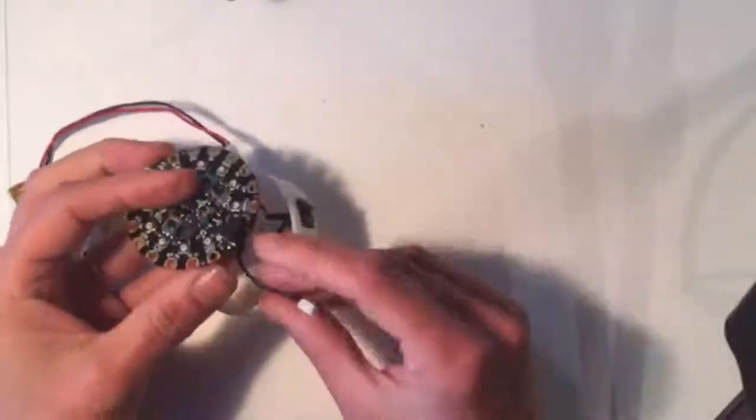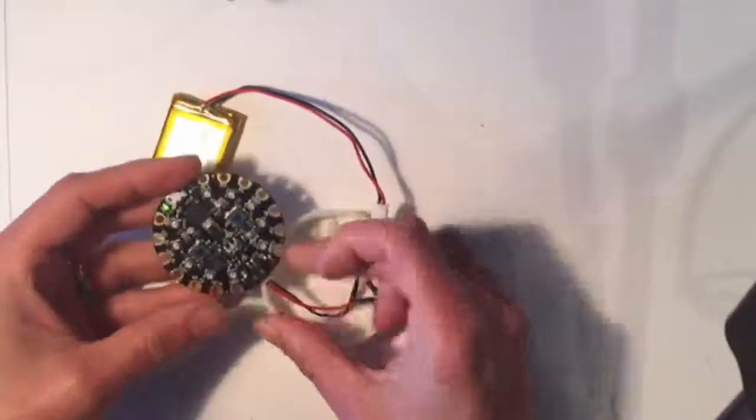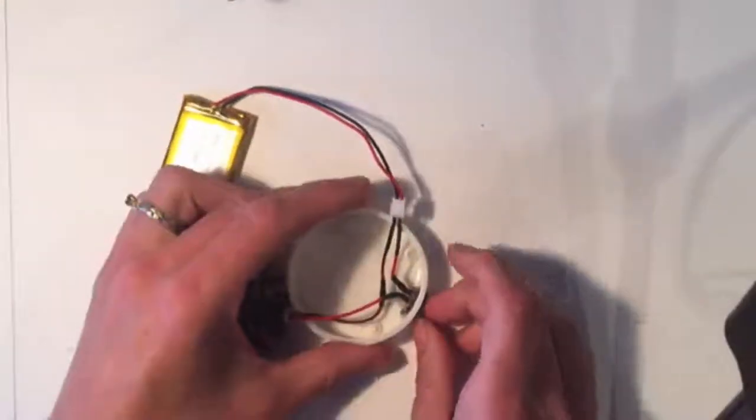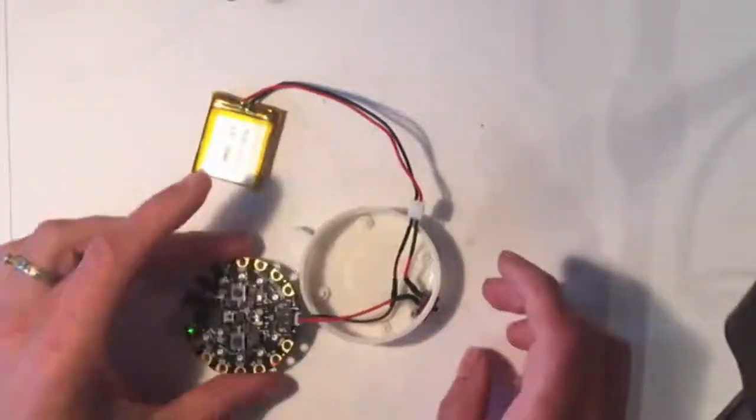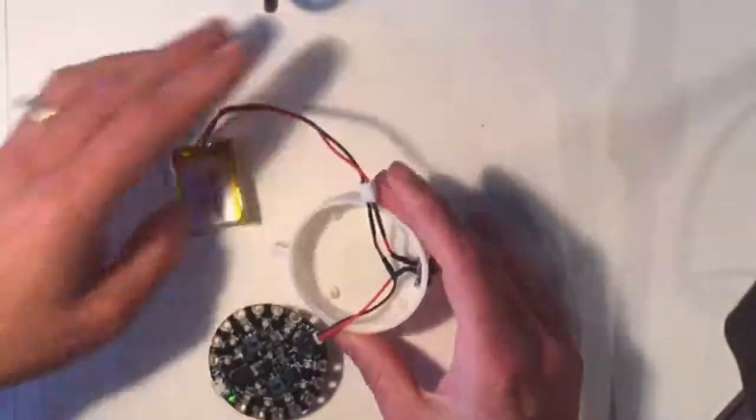After you've uploaded your code to your Circuit Playground, plug it in and make sure everything works. If it all looks good, coil everything neatly up inside the case.